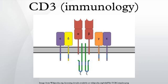These chains associate with a molecule known as the T-cell receptor and the zeta chain to generate an activation signal in T lymphocytes. The T-cell receptor, zeta chain, and CD3 molecules together comprise the T-cell receptor complex structure.